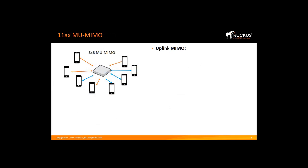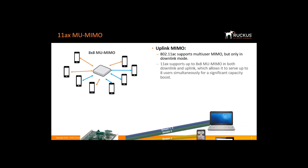OFDMA also works in tandem with multi-user MIMO. Multi-user MIMO allows an AP to address multiple devices simultaneously instead of one at a time sequentially. It was introduced in 11ac but only in downlink mode. 11ax supports up to 8x8 multi-user MIMO in both downlink and uplink modes, allowing it to serve up to 8 users simultaneously for a significant capacity boost, also benefiting legacy devices such as 802.11ac Wave 2.